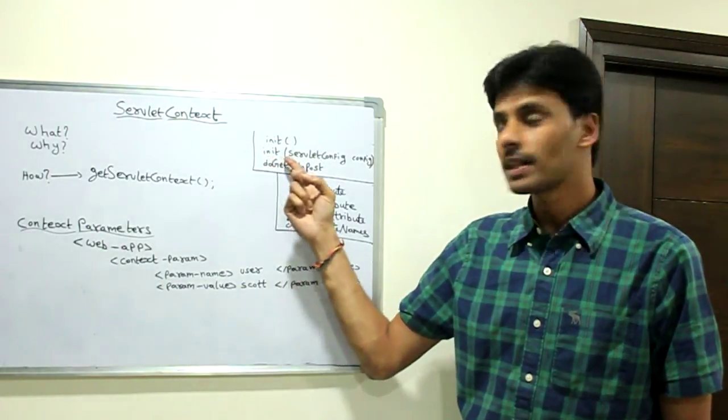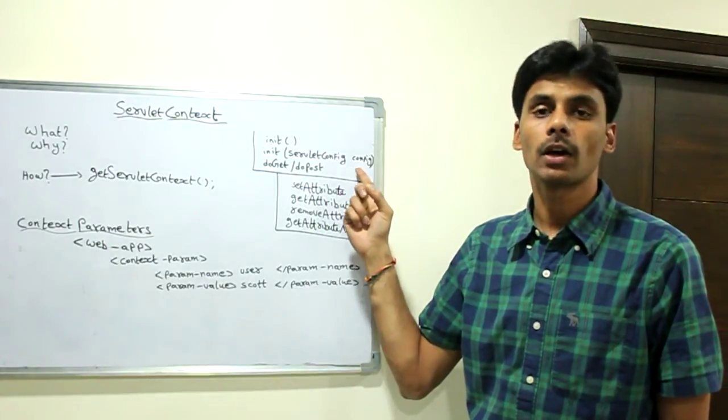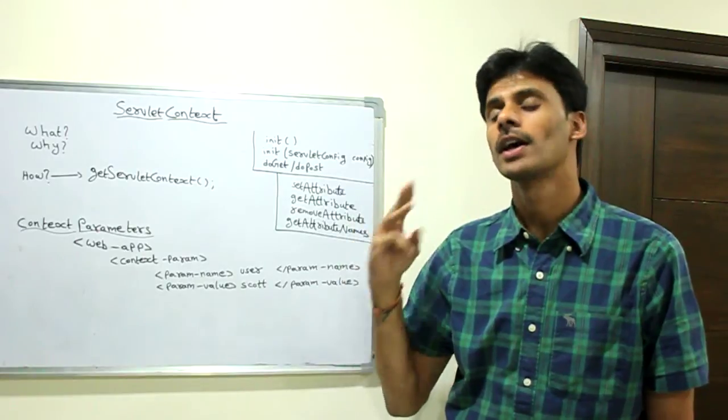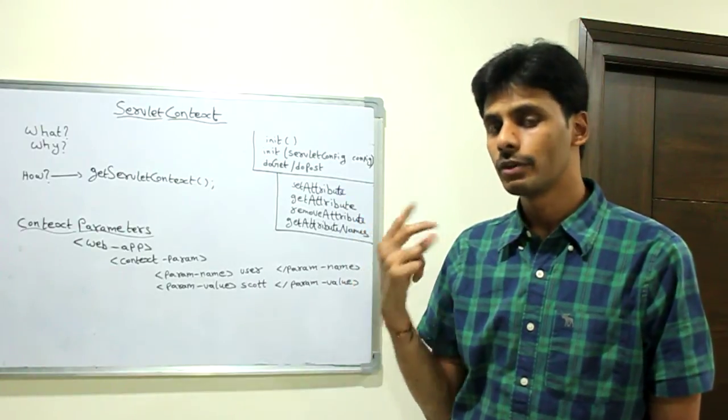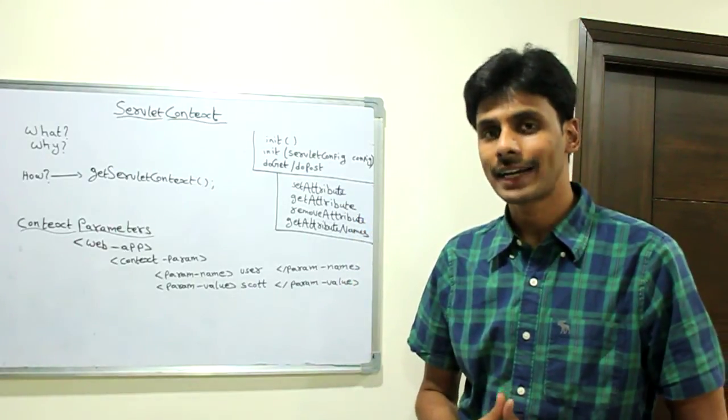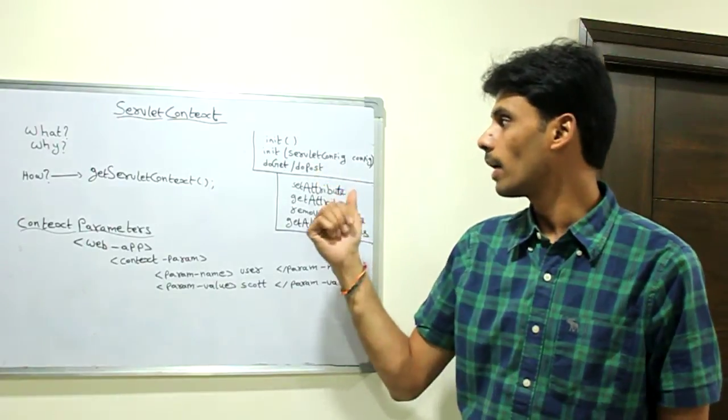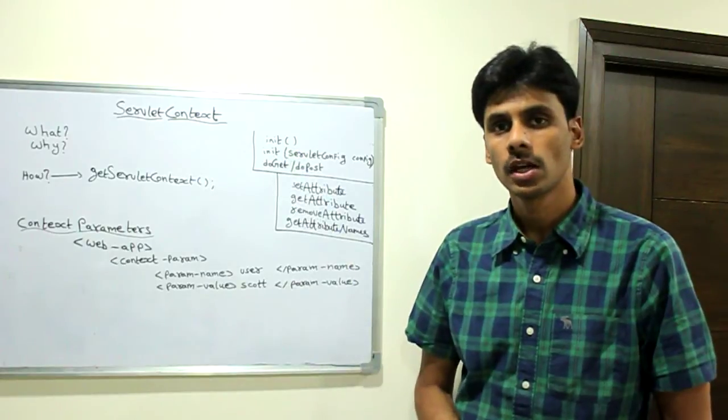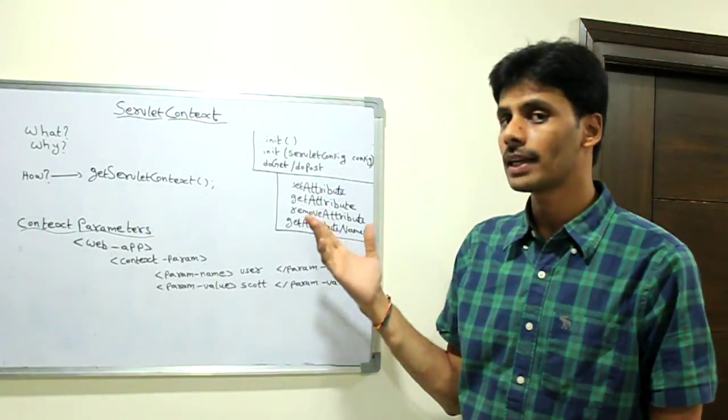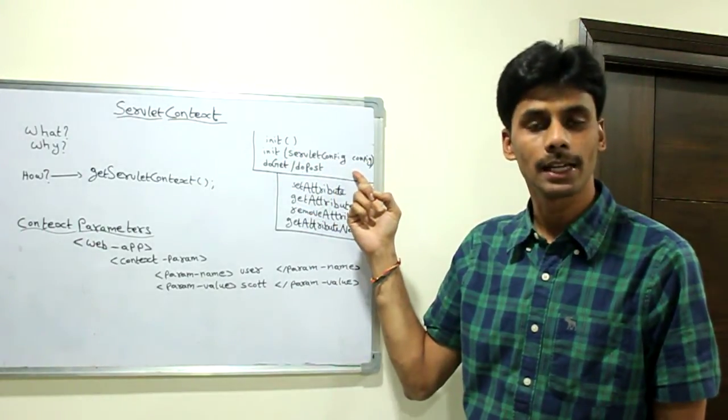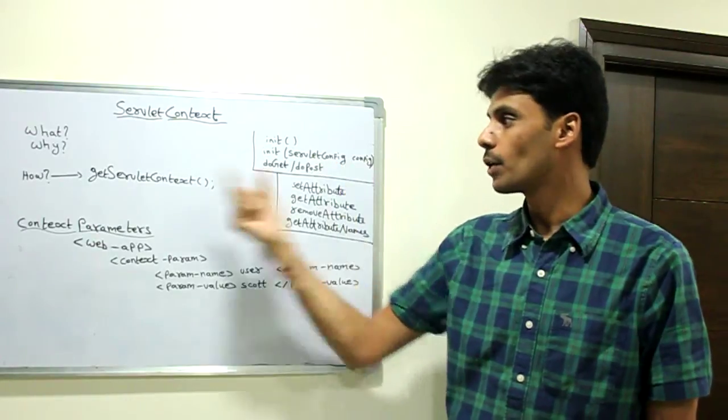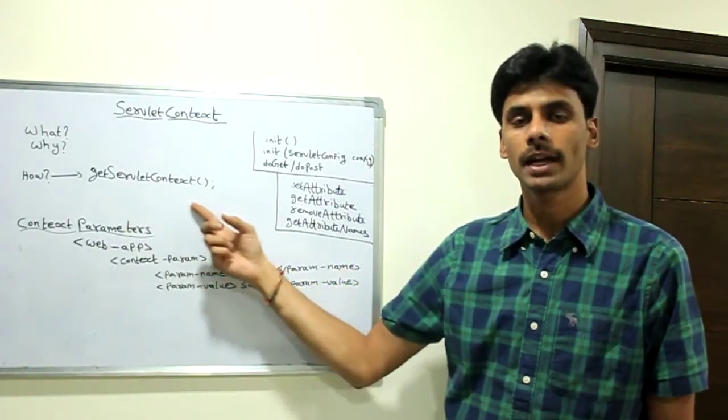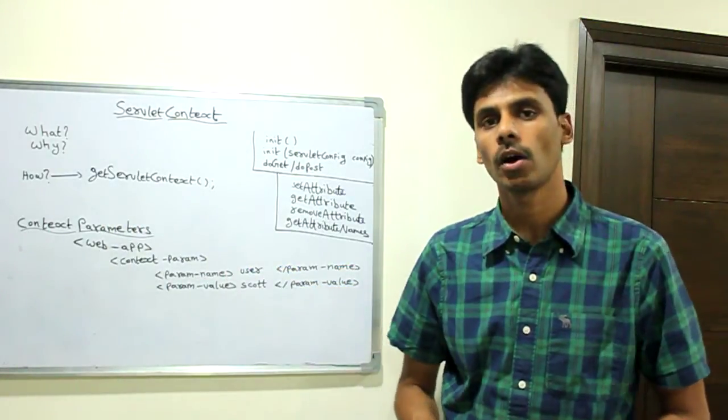Within the init method that takes the servletConfig as the parameter, you can call config.getServletContext. So there are two ways in which you can retrieve a servletContext object. One by calling getServletContext directly within your init method without any parameters, and within the init method that takes servletConfig as the parameter, you call config.getServletContext. Within your doPost and doGet, use the same getServletContext without any object.